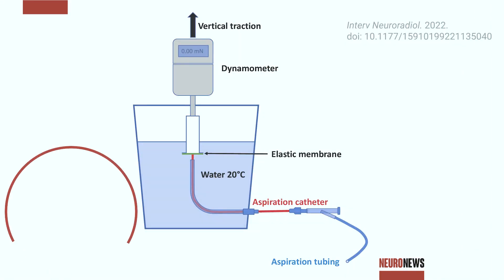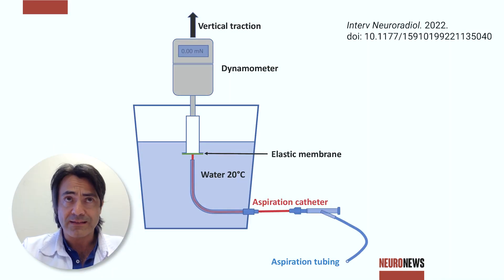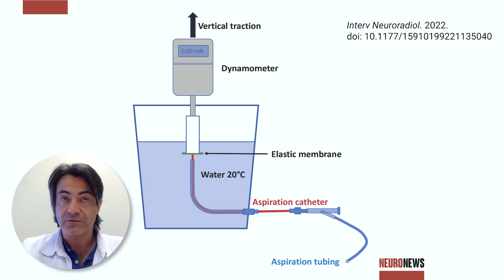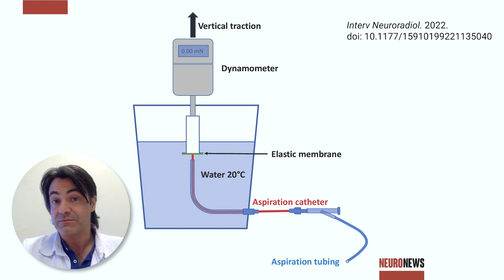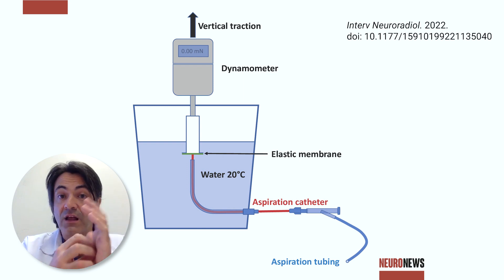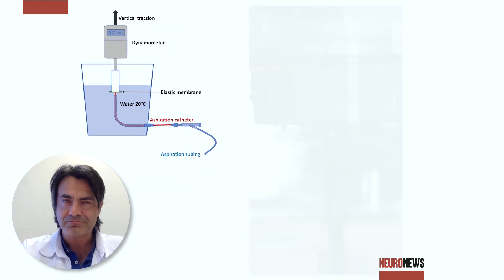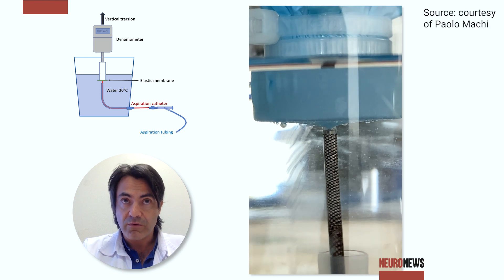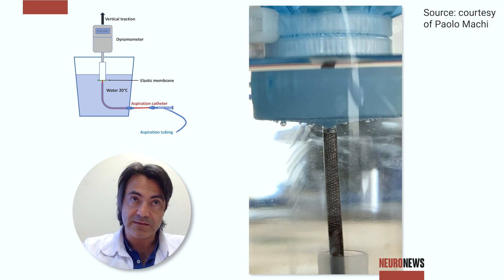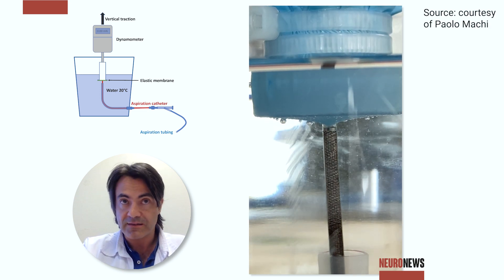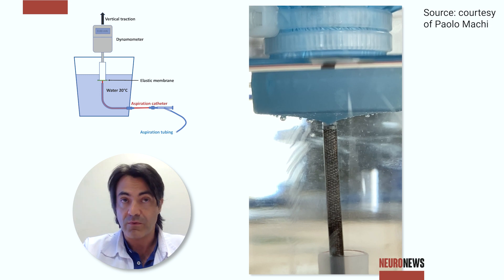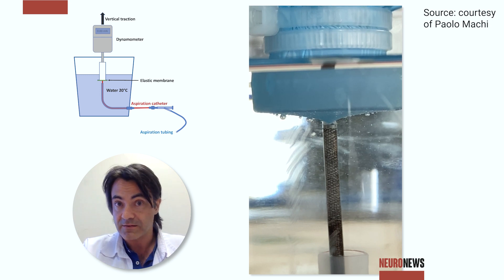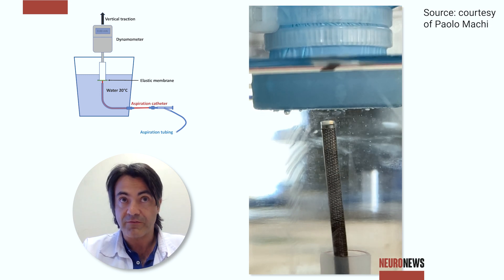For aspiration parameters, we also evaluate the aspirational force and flow rate. Force is the force developed once the catheter is blocked — meaning there's a clot, for example, stuck in the distal tip of the catheter — while the flow rate is the amount of water that is aspirated through the catheter in a specific unit of time.